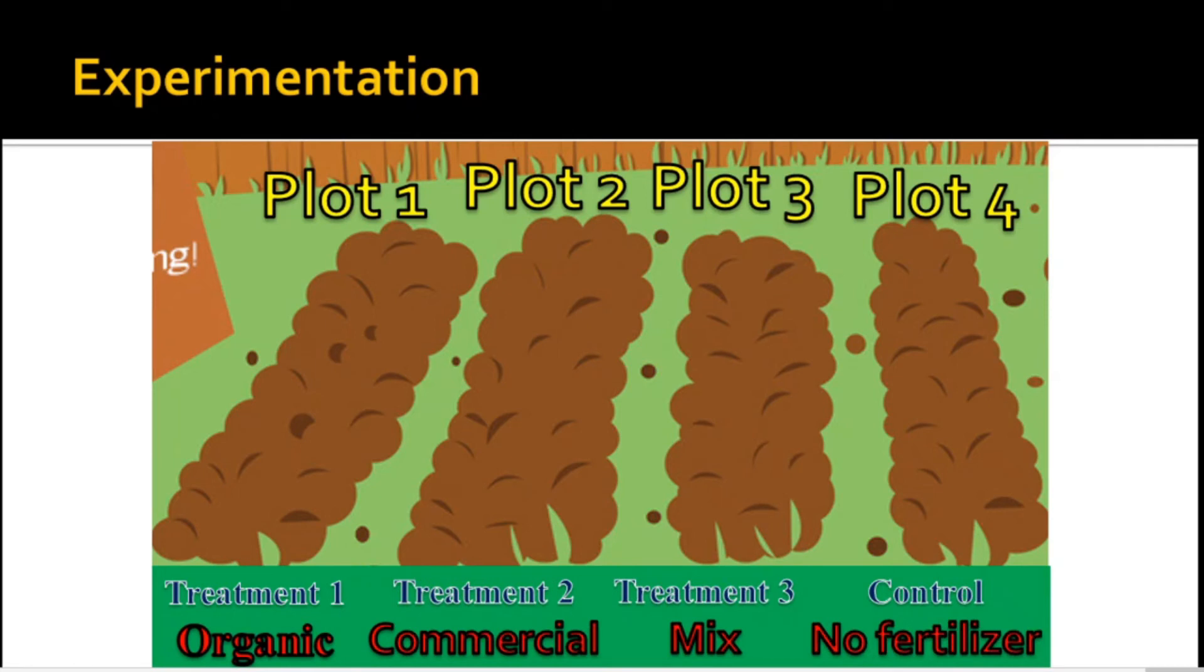The first three plots where the fertilizers were applied into are called treatments. The last plot is called the control group because no fertilizer is applied. For experiments like these, observations from control groups serve as a baseline or a starting point for the experiment. In doing an experiment, it is important that the other factors not included in the study are eliminated or controlled.